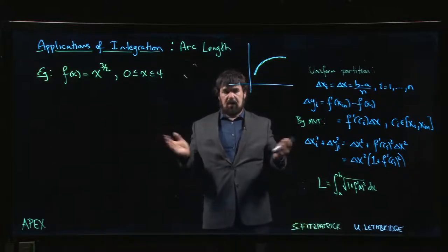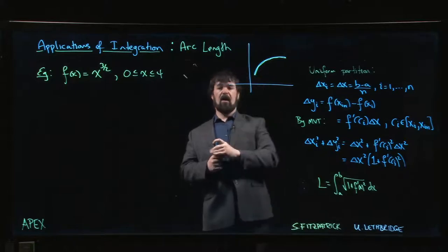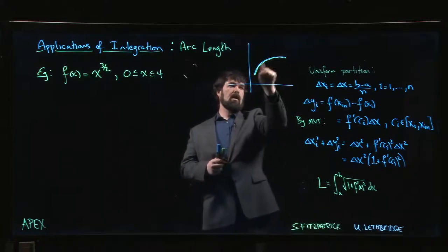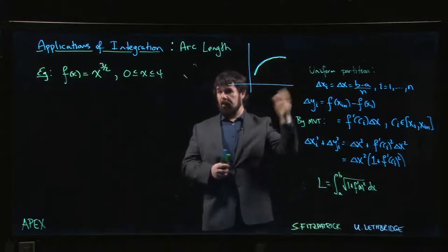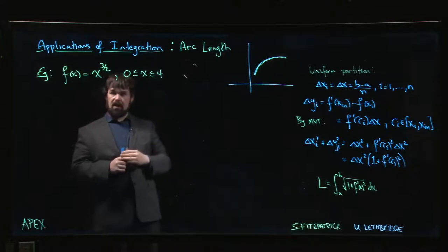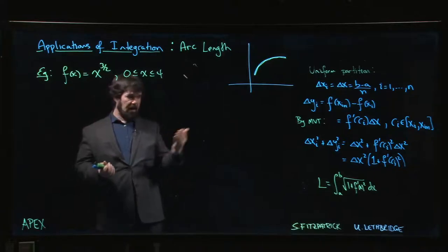which is not something that we technically know how to do - we know how to calculate lengths of line segments. Well, if we split our curve up into little line segments that are approximately the same as the curve, we can calculate the length of each of those line segments, add it up, and we get a Riemann sum.